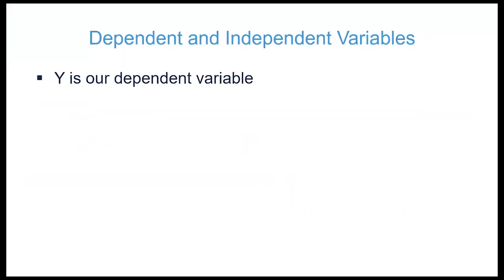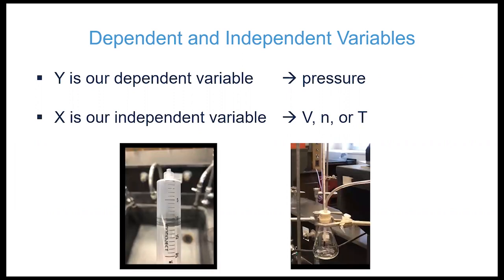Generally speaking, Y is our dependent variable or the one that responds to the change of the independent variable. In all of today's experiments this will be pressure. The independent variable, oftentimes expressed as X, will be either our volume, number of moles of gas, or temperature. We'll be changing them by changing the volume inside the syringe, changing the amount of air we seal in the syringe, or changing the temperature inside of the Erlenmeyer flask.